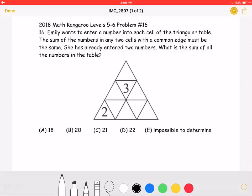This is the 2018 Math Kangaroo Levels 5-6, Problem Number 16. Emily wants to enter a number into each cell of the triangular table.